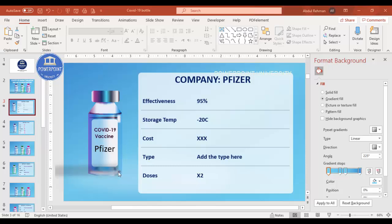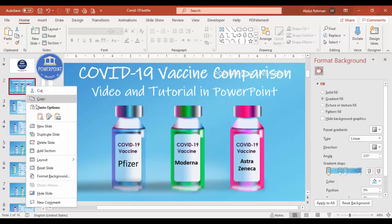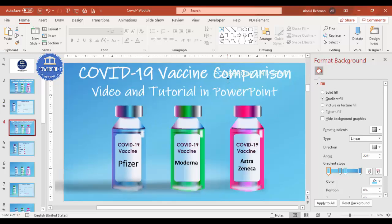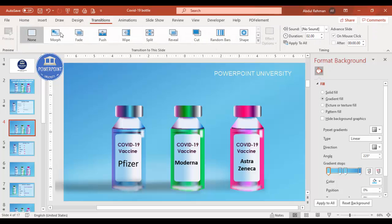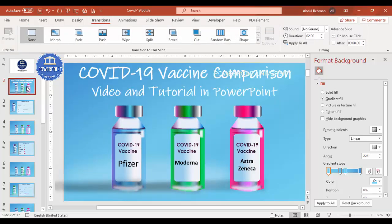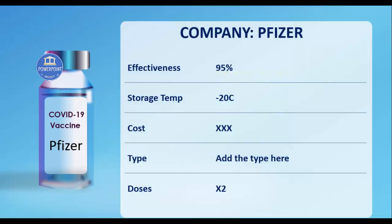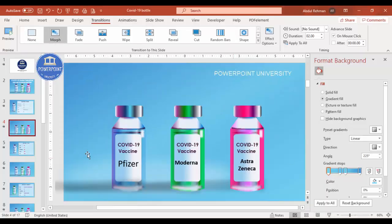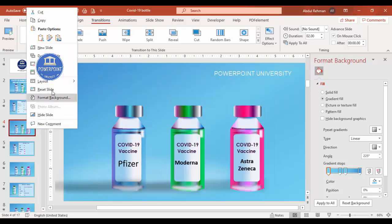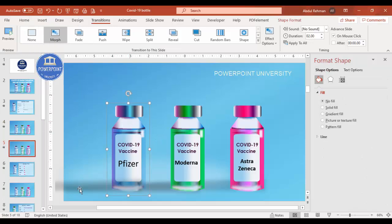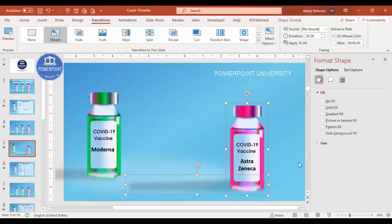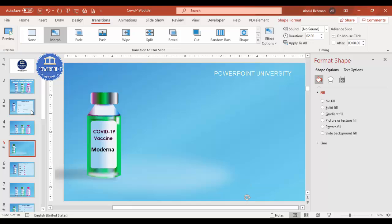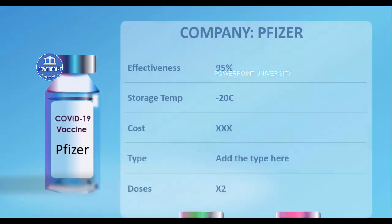Similarly I have to do this for the other vaccines. I'll right-click, duplicate the slide, and bring it just below the one I created. I'll remove the title. For this slide too I'll go to Transitions and set it to morph. Now when I click it goes, the Pfizer details come, then it comes back. I'll duplicate again, select the Pfizer bottle and move it out, bring it down, then for Moderna I'll bring that bottle here and move the others down.